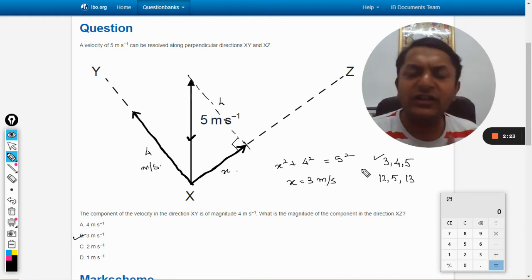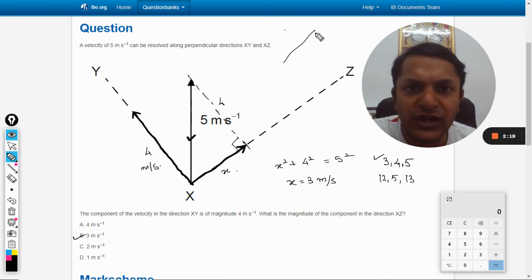This triangle which is having three sides—one is 3, 4, and 5—is especially very important. There are some angles also that we are told to learn.